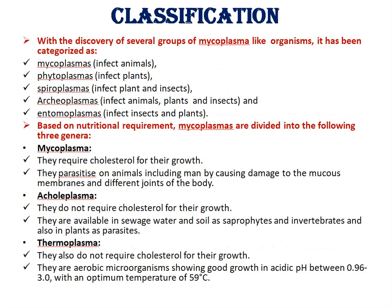With the discovery of several groups of mycoplasma, they have been categorized as: mycoplasmas, which infect animals; phytoplasmas, which infect plants; spiroplasmas, which infect plants and insects; acholeplasmas, which infect animals, plants, and insects; and thermoplasmas, which infect insects as well as plants.